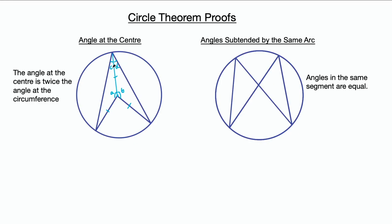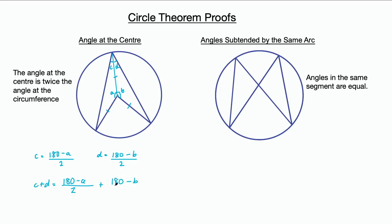If we call this angle C, this angle over here would also be C. So two lots of C equals 180 − A, because angles in a triangle add up to 180. So C = (180 − A) / 2. Same for D: D = (180 − B) / 2. Then to get an expression for the whole angle at the circumference, C + D = (180 − A)/2 + (180 − B)/2.